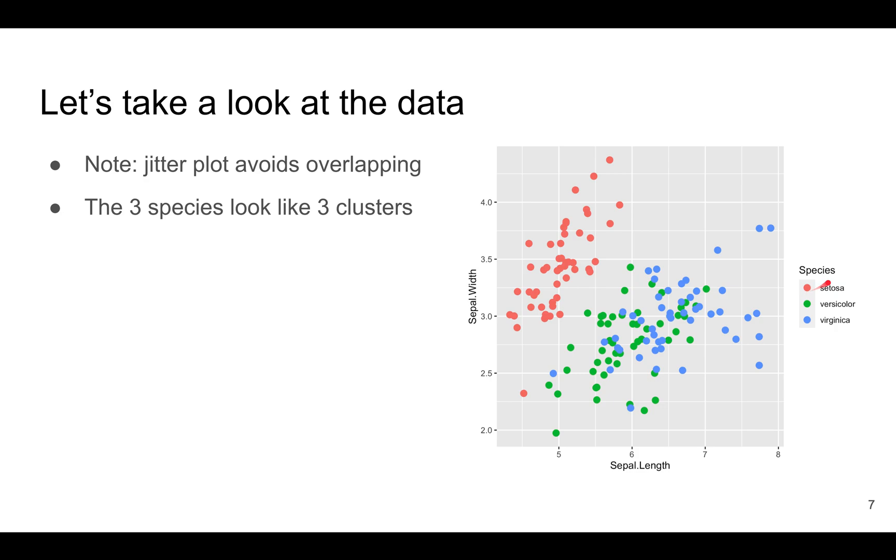If you look at the data where I've plotted the species by color, you can sort of see the three clusters. This is one cluster. This is another cluster of versicolor, and this is the cluster of virginica.